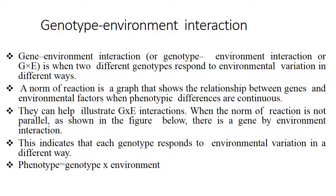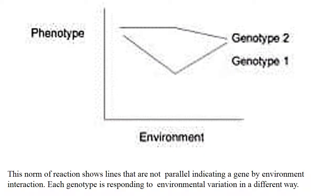Coming to G×E interaction, this interaction happens when two different genotypes respond to environmental variation in different ways. A norm of reaction is a graph that shows the relationship between genes and environmental factors when phenotypic differences are continuous. They can help illustrate G×E interaction. When the norms of reaction are not parallel, as shown here, there is a gene-by-environment interaction, indicating that each genotype responds to environmental variance in a different way. Genotypes 1 and 2 are interacting in different environments, and these non-parallel lines indicate gene-by-environment interaction.